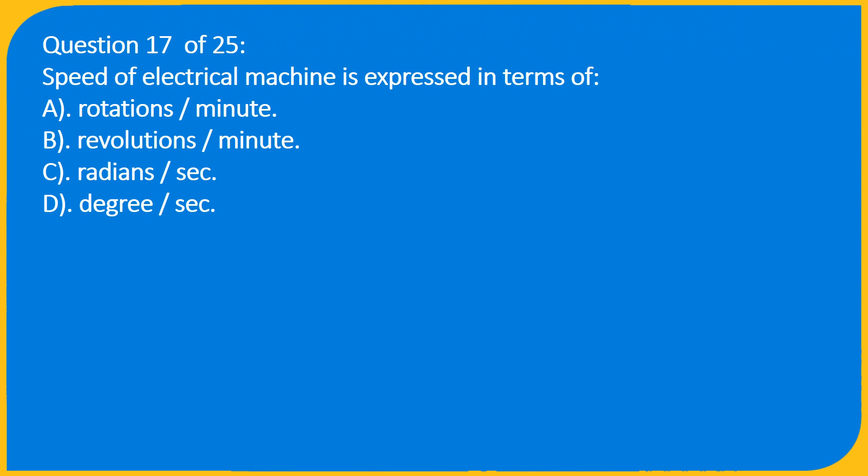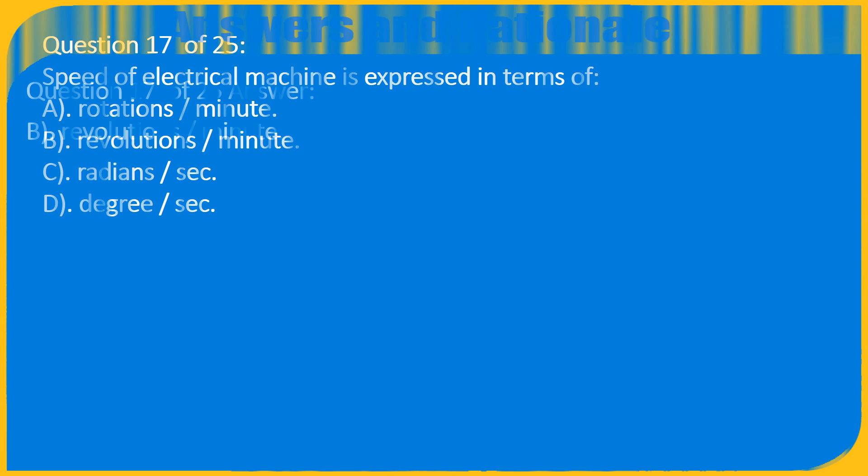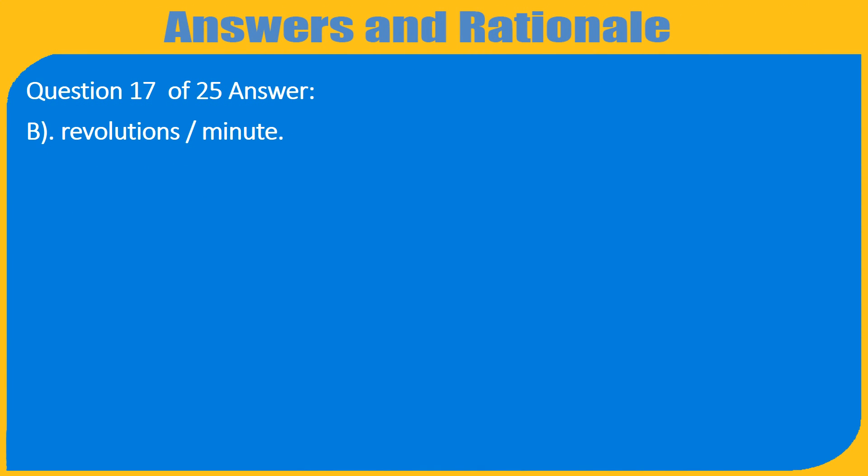Question 17 of 25: Speed of an electrical machine is expressed in terms of — A. Rotations per Minute, B. Revolutions per Minute, C. Radians per second, D. Degrees per second. Answer: B. Revolutions per Minute.